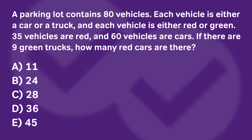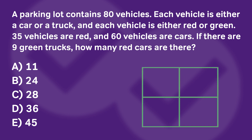So let's go ahead and do that. Now you might be tempted to draw a Venn diagram, but here we actually have two different kinds of categories. We have colors and we have type of vehicle, so we're going to make a 2x2 square because it's a lot easier to manage this information in this format versus a Venn diagram. On one axis we have cars and trucks — the type of vehicle. On the top we have the colors red and green.